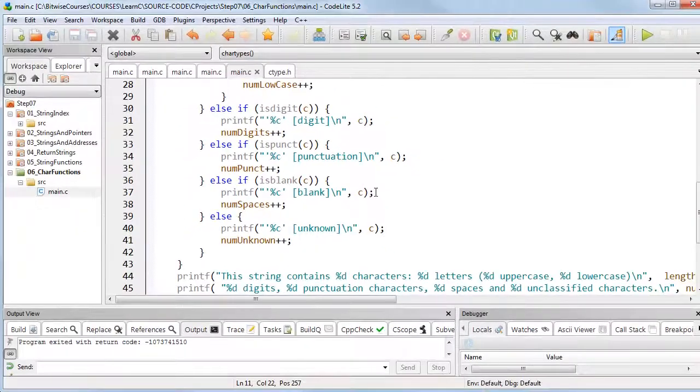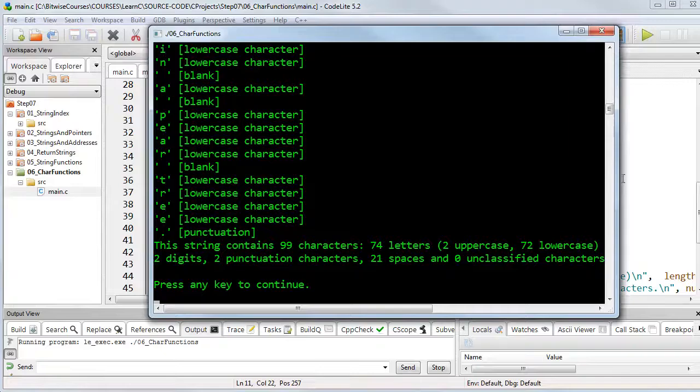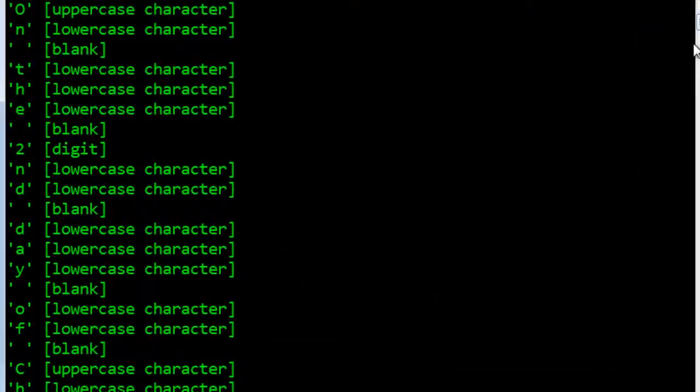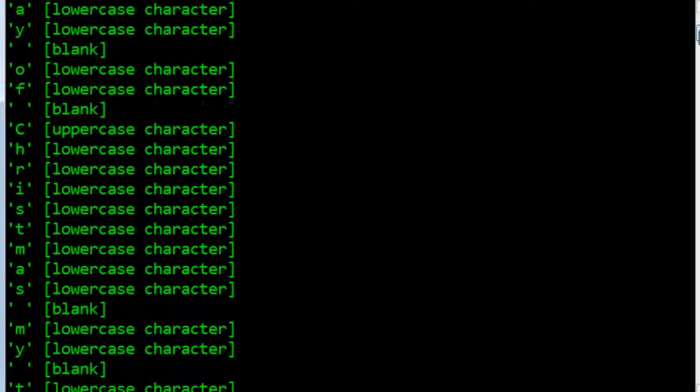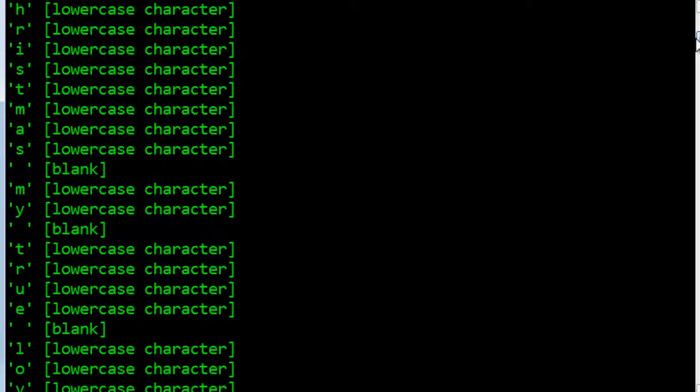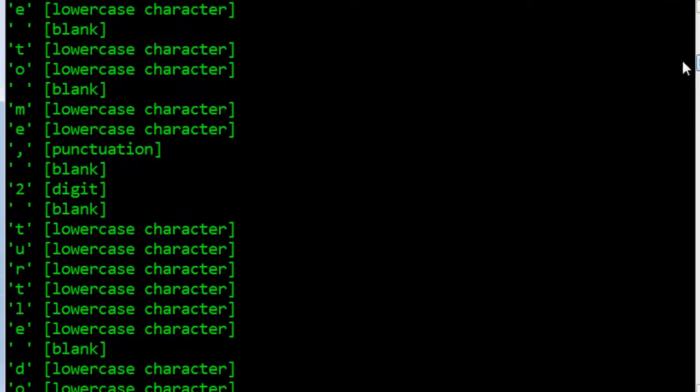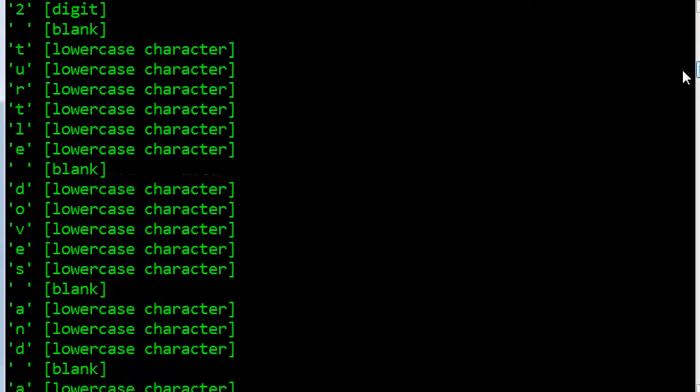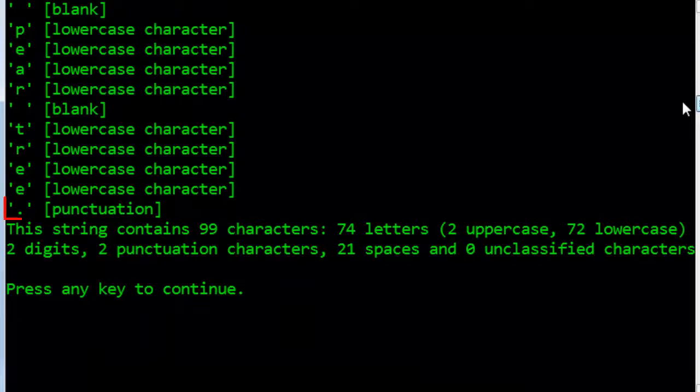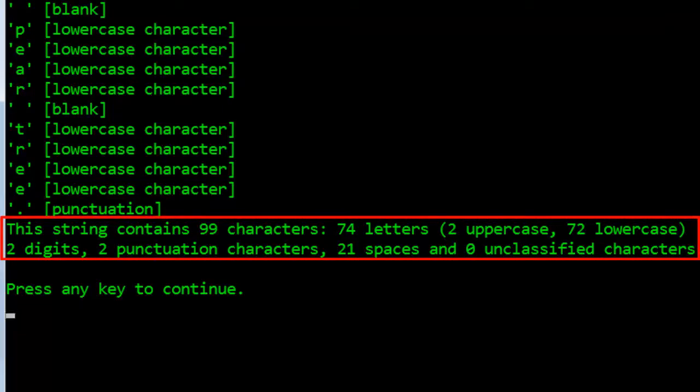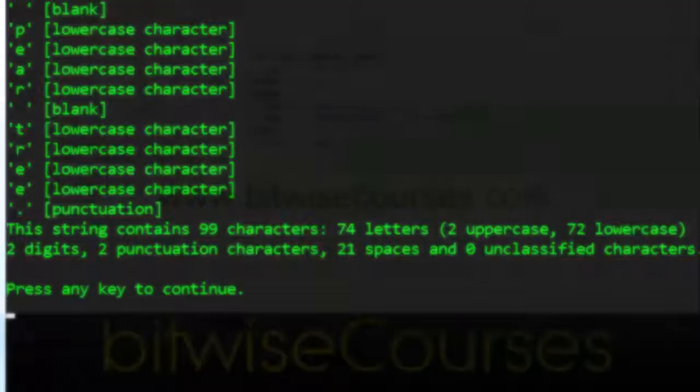So let me run this. And scroll up the top, this is what I see. So, uppercase, lowercase, blank. Here I've got my first digit, a 2. And the rest is pretty obvious. Blanks and lowercase letters. Another digit here. And finally, punctuation at the end. And then it displays the totals right at the end.